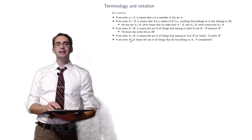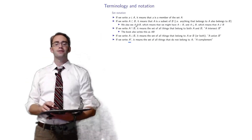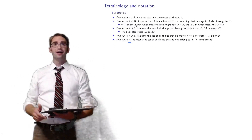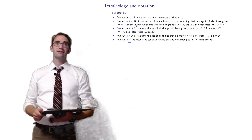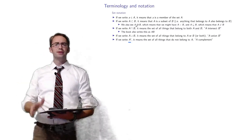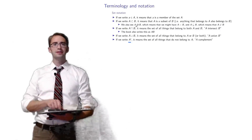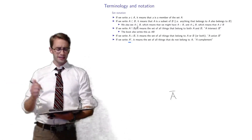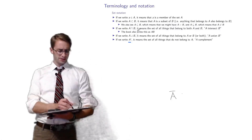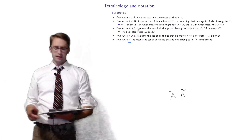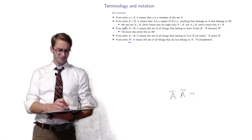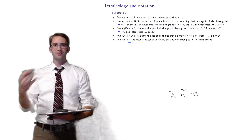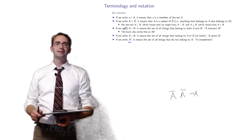If you write a little superscript C, that stands for complement — all the things that don't belong to A, written as A complement. Other notational conventions include a bar over A or a tilde over A to mean the complement of A. Logicians sometimes use the 'not' symbol next to it. We'll just stick with the superscript C, but if you're reading on the internet you'll see all kinds of other notational practices.